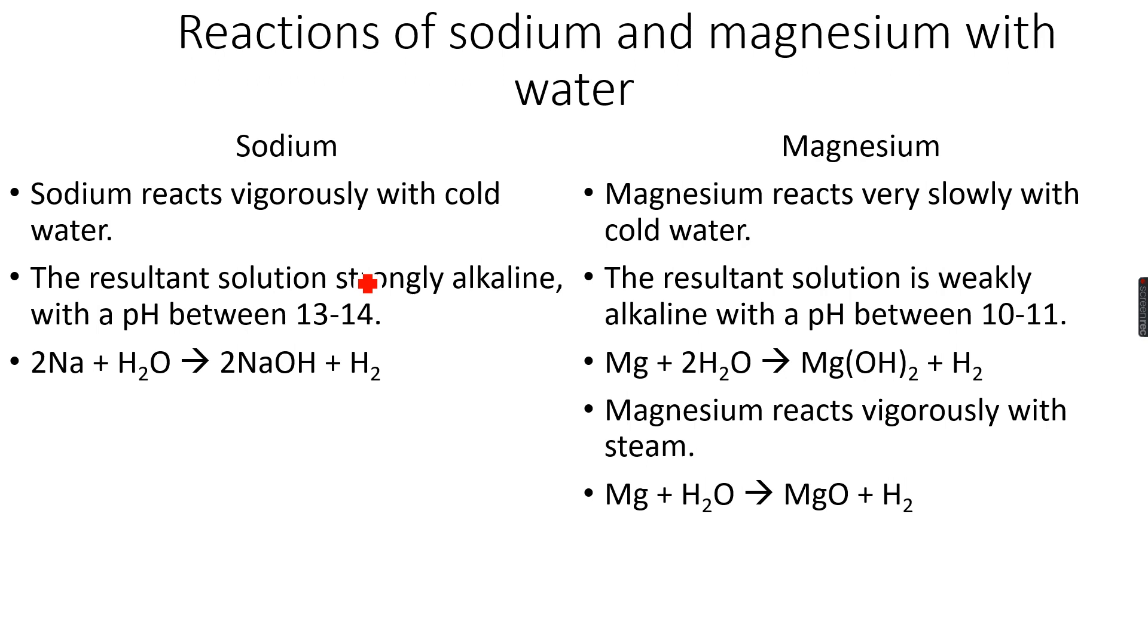Now we are coming to the chemical properties. Reactions of sodium and magnesium with water. When sodium reacts with water, it reacts vigorously with cold water. The resultant solution is strongly alkaline because the resultant solution is sodium hydroxide. Because of the OH negative ions, it is strongly alkaline.